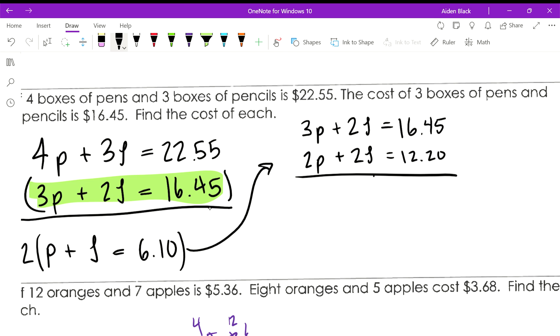We'll subtract the second one from the first one like so, and we'll get 1 box of plumas plus 2 boxes minus 2 boxes is 0, so this is 0, you don't even have to write it. And then $16.45 minus $12.20 would be $4.25. So we know a box of pens is $4.25.